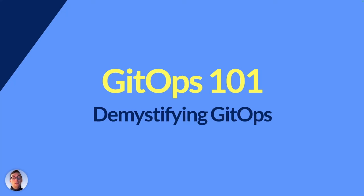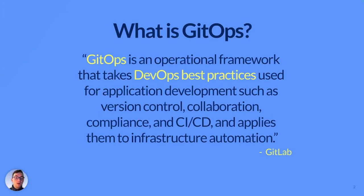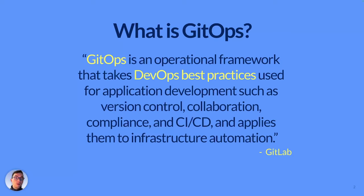So first of all, what is GitOps? GitLab defines it as an operational framework that takes DevOps best practices used for application development — such as version control, collaboration, compliance, and CI/CD — and applies them to infrastructure automation. Infrastructure automation includes deploying new resources, new network policies, config maps, regular deployments, pods — whatever there is in Kubernetes, for example.